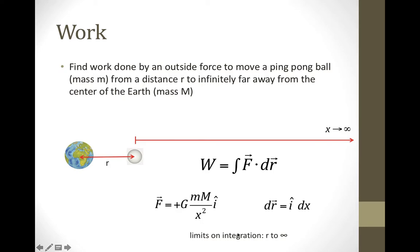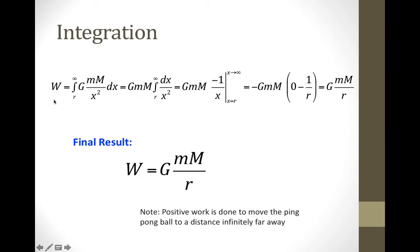We're going to integrate from our initial position at r to our final position infinitely far away. The work will be the integral from r to infinity of GMm over x squared dx. GMm are constants, so we factor them out. The antiderivative of 1 over x squared is minus 1 over x, and we'll evaluate that from x equals r to the limit of x going to infinity.